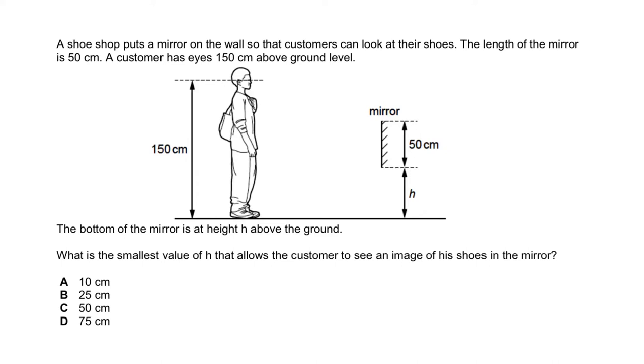In this video, you're required to find the smallest value of H, which is over here, such that the customer can still see his shoe, which is this portion over here. You're given that this is 150cm.